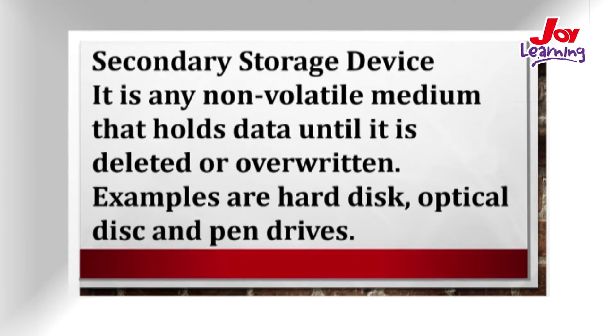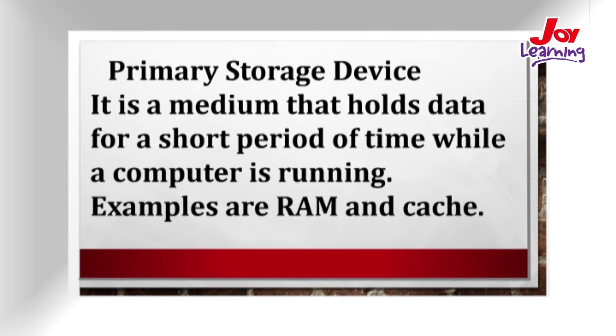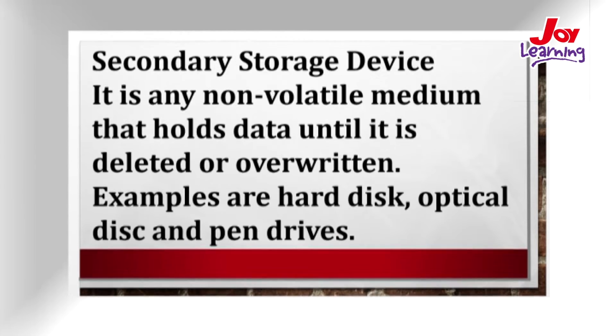The secondary storage device does the opposite of the primary. The primary stores information temporarily, but the secondary stores information permanently — it keeps information until the user deletes it or overwrites it. The secondary storage device keeps information even if the computer is not in use. Examples include the hard disk, the optical disk, and pen drives.